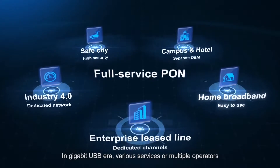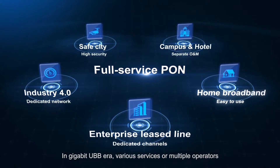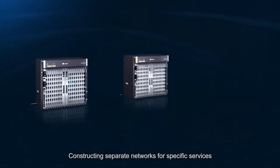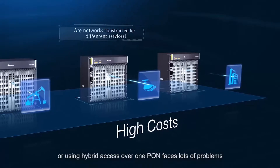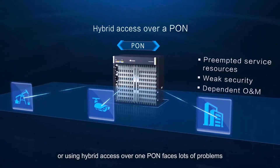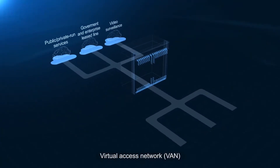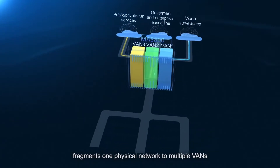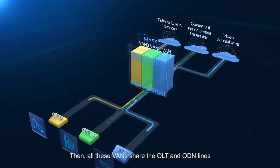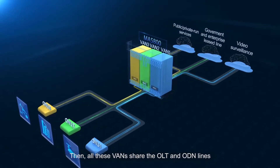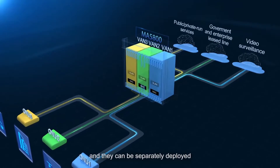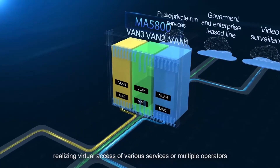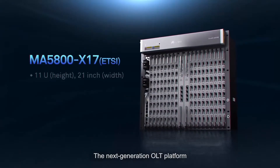In the gigabit ultra-broadband era, various services or multiple operators will be supported over one PON network. How to meet differential service requirements? Constructing separate networks for specific services or using hybrid access over one PON faces lots of problems. Virtual access network, supported by the MA5800, fragments one physical network into multiple virtual access networks. All these virtual access networks share the OLT and ODN lines, and they can be separately deployed, maintained, and managed, realizing virtual access for various services or multiple operators.